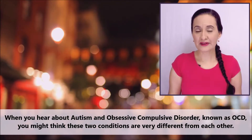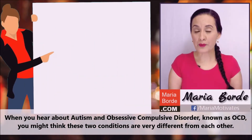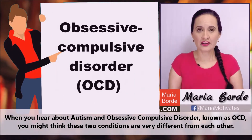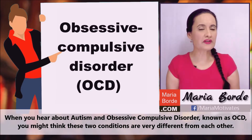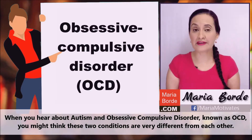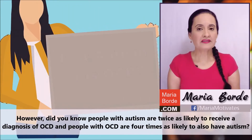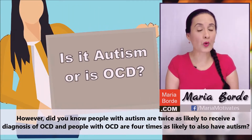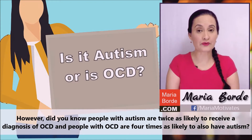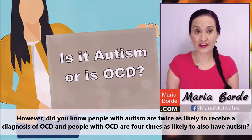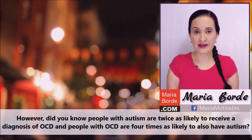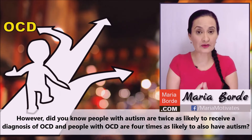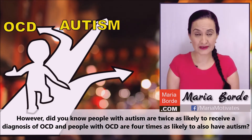When you hear about autism and obsessive compulsive disorder known as OCD, you might think these two conditions are very different from each other. However, did you know people with autism are twice as likely to receive a diagnosis of OCD, and people with OCD are four times as likely to also have autism?